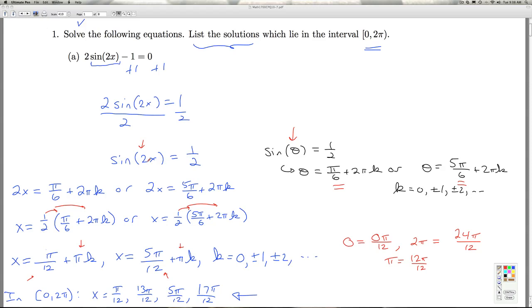The period's π instead of 2π. And so therefore, we do expect twice as many answers between 0 and 2π. So we expect four answers. That's just a quick double check that we're getting the correct number of solutions.